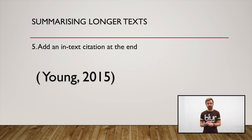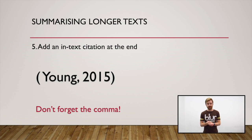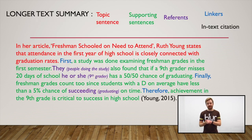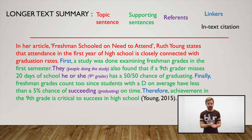Put an in-text citation at the end. This should include parentheses with the author's surname and the year the article or book was published. After you do this, you should have a paragraph of about four to six sentences. To review: summarizing is writing the main idea in your own words without unnecessary details. In an example summary paragraph, there is a topic sentence with the main idea and the author and title, supporting details that support the topic sentence, reference and linkers to add cohesion, and an in-text citation at the end.